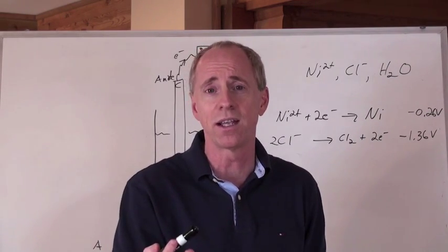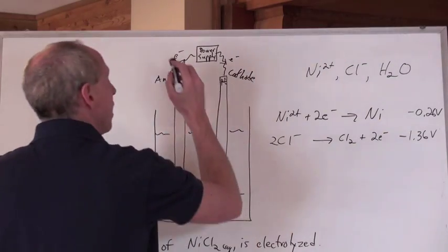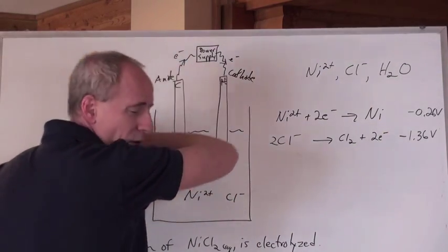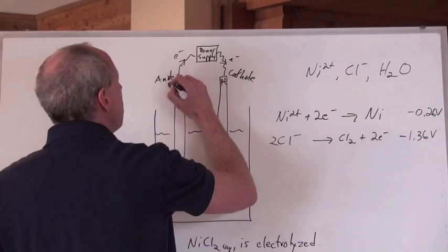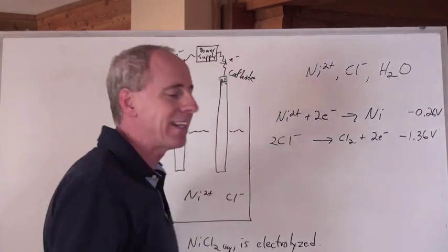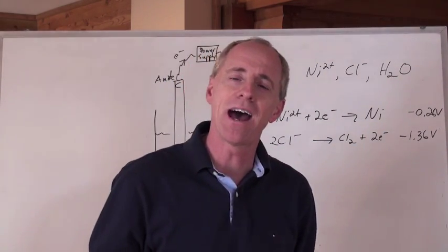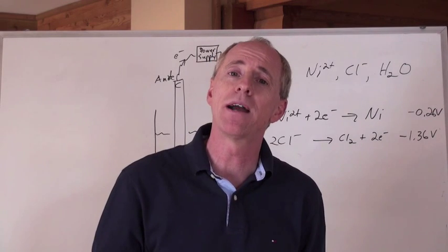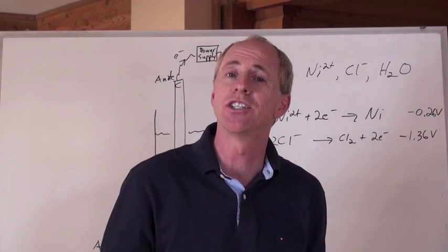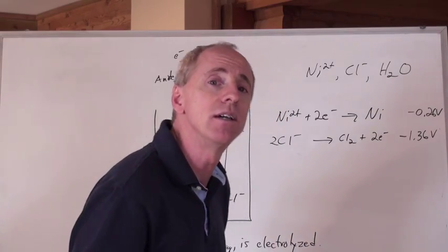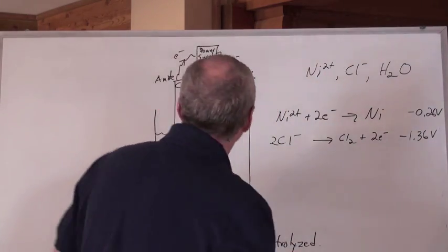Yeah, everything pretty much is opposite, except for one thing, that electrons will still always move, no matter what type of cell you have, from the anode to the cathode. And cations always migrate to the cathode, and anions always migrate to the anode. So the little song never changed. Cations migrate to the cathode.